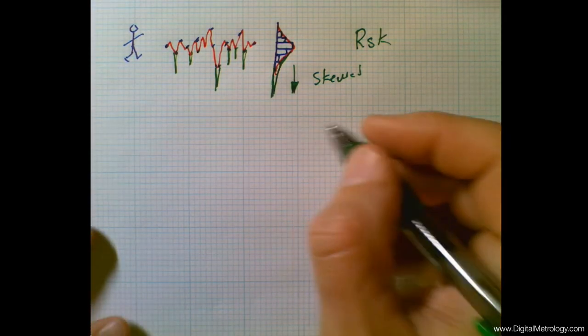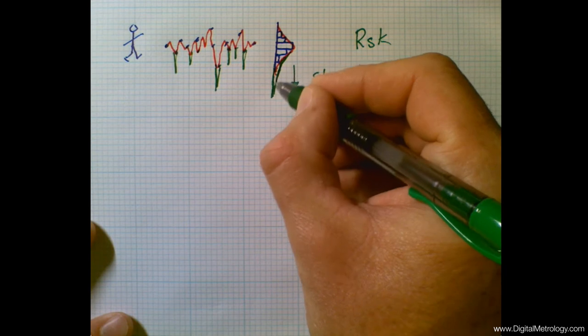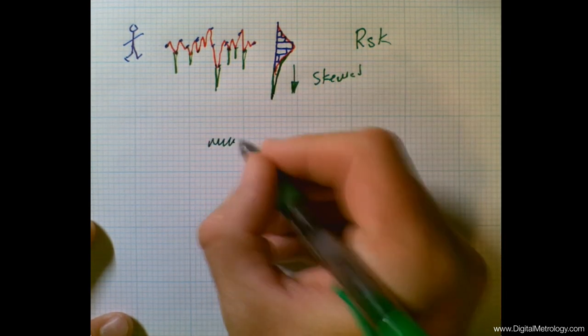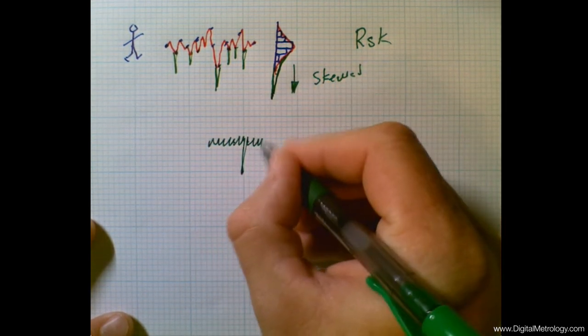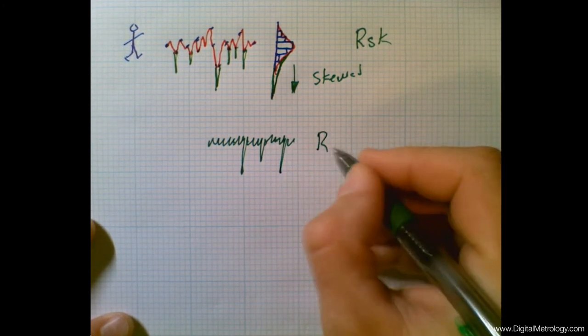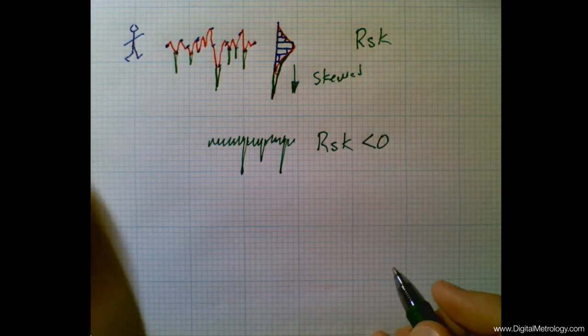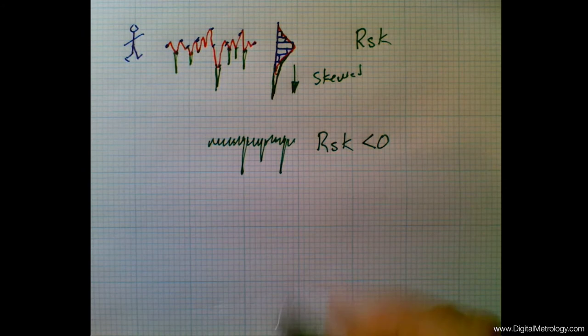The RSK parameter measures or reports, if you will, the direction that the bell curve has been moved. So our plateaued surface that has some valleys in it, maybe the thing that you're actually intending, is going to have a negative skewness. So this skewness is going to be less than zero as it's skewed negatively.